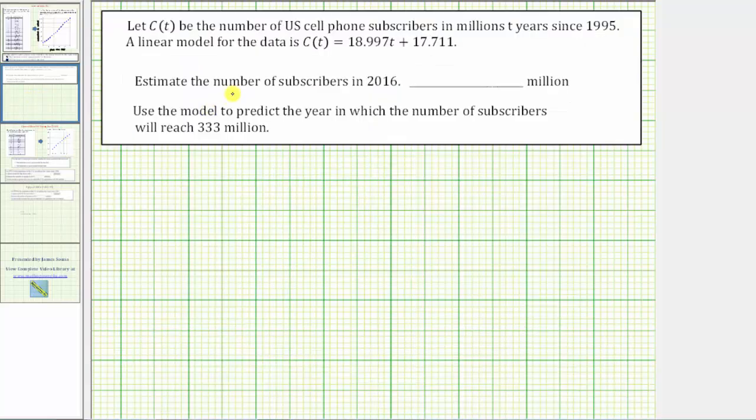The next question is to estimate the number of subscribers in the year 2016. We need to be careful here. We do not use t = 2016 to make this prediction because t is the number of years since 1995. For the year 2016, the value of t would be equal to the desired year of 2016 minus the base year of 1995, which is equal to 21.